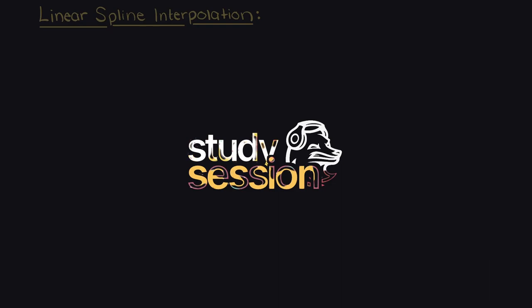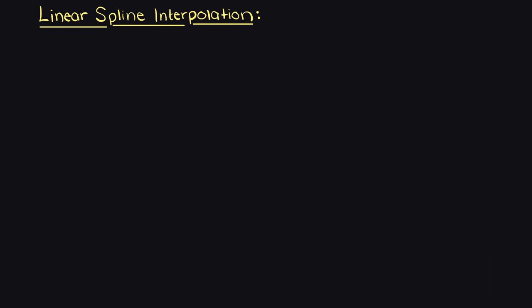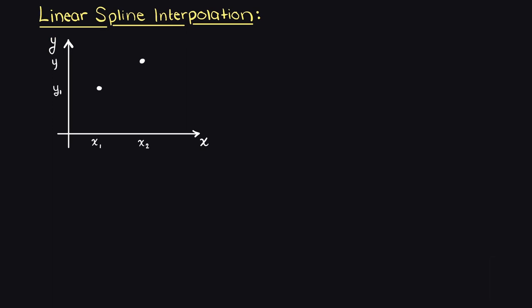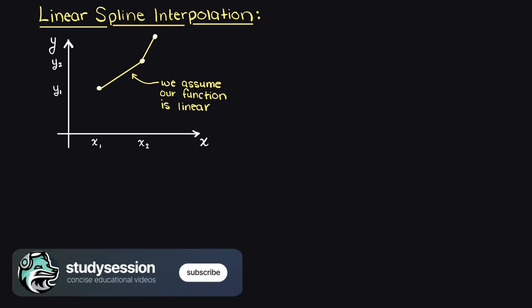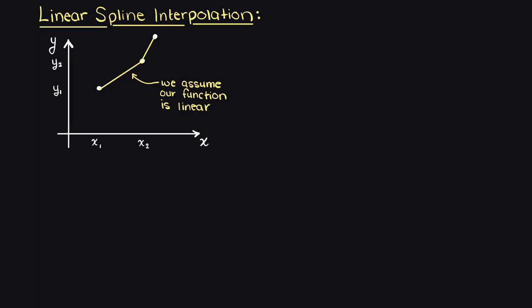Let's talk about what linear spline interpolation is and how we go about using it. In linear spline interpolation, we use the assumption that between our data points of interest our system is linear. This means that we can connect our data points directly through straight lines, which is a first order polynomial. Or, if we wish to interpolate between multiple data points, it is a series of segmented straight lines.